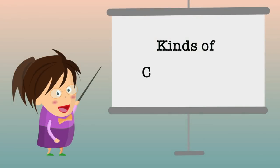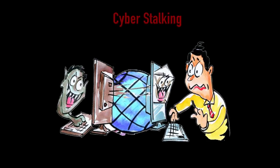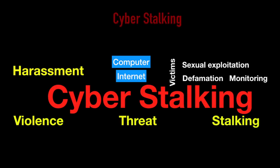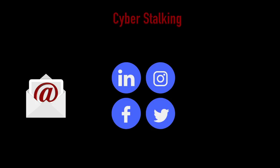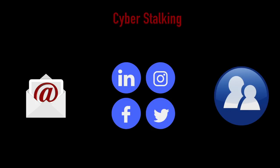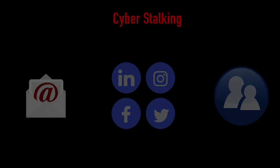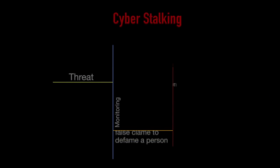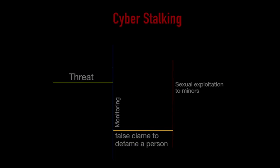Now we will discuss various kinds of cybercrime. The first is cyberstalking — an act of stalking, harassing, or threatening someone using the internet or computer as a medium. This is often done to defame a person using email, social networks, instant messengers, or posting, exploiting the anonymity the internet offers. The behaviour includes false claims to defame a person, threats, sexual exploitation of minors, and monitoring.